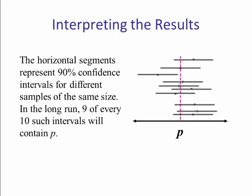The horizontal segments represent 90% confidence intervals for different samples of the same size. In the long run, 9 of every 10 such intervals will contain p. So that is why we call it a 90% confidence interval. So if we pick out an individual confidence interval, like this one, either it contains p or it does not. And in this case, this one contains p. If we were to get a sample and produce this confidence interval, and in this case, this confidence interval does not contain p. But we see in the long run, we expect 90% of the confidence intervals to contain p, 10% not.